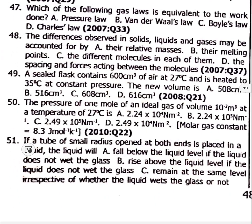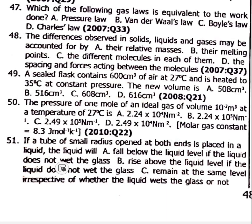Question 51: If a tube of small radius open at both ends is placed in a liquid, the liquid will fall below the liquid level if the liquid does not wet the glass — option A.